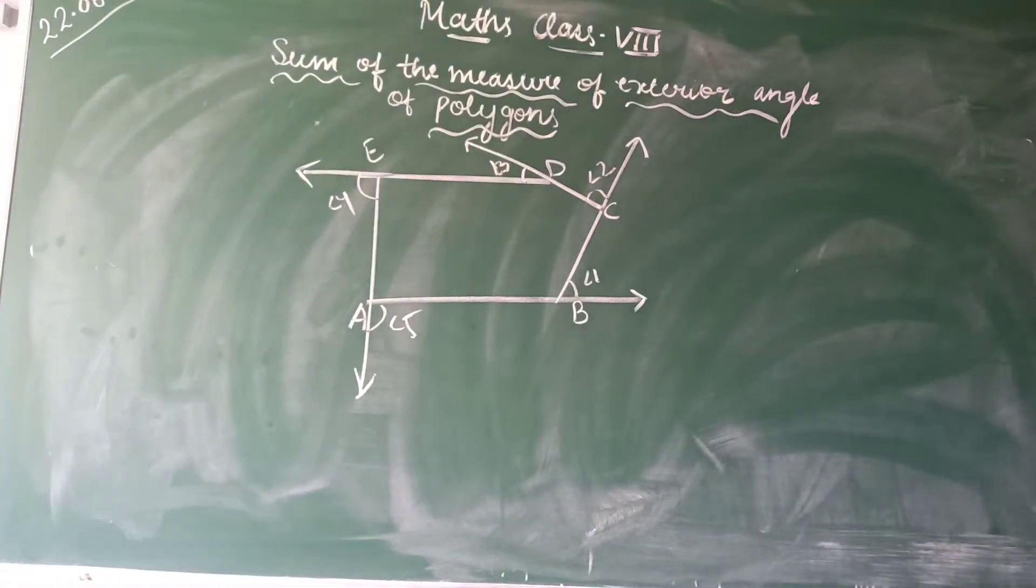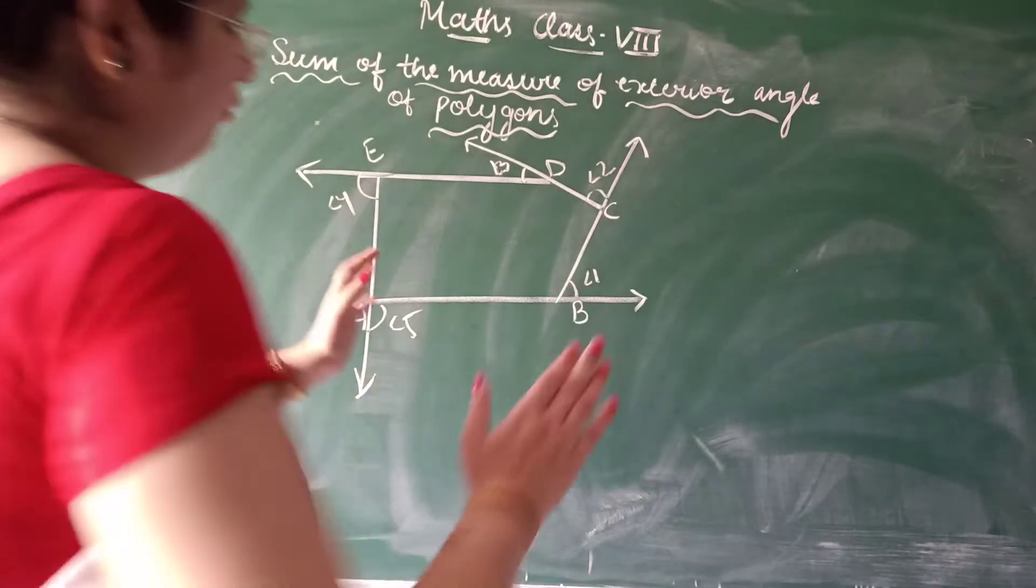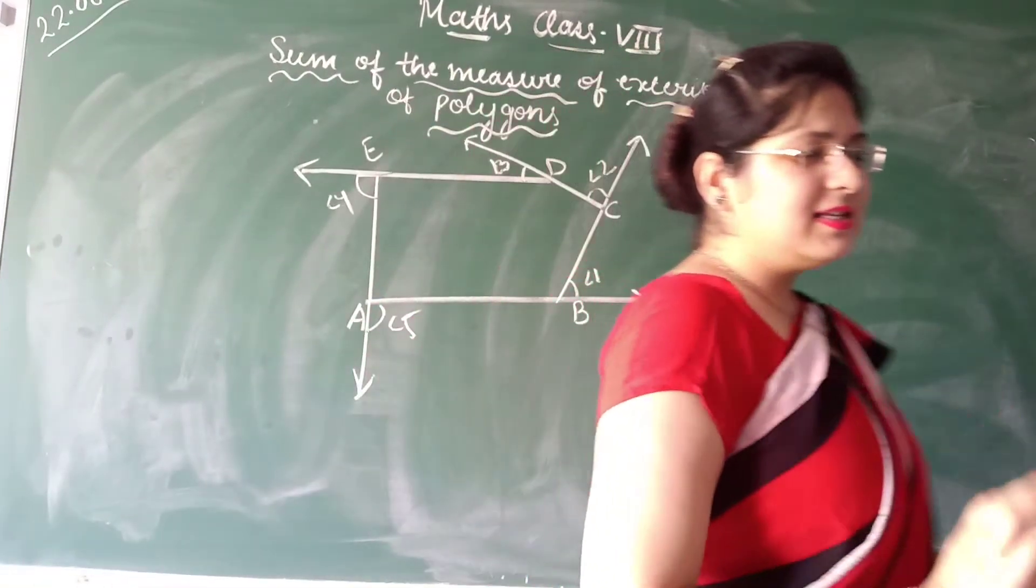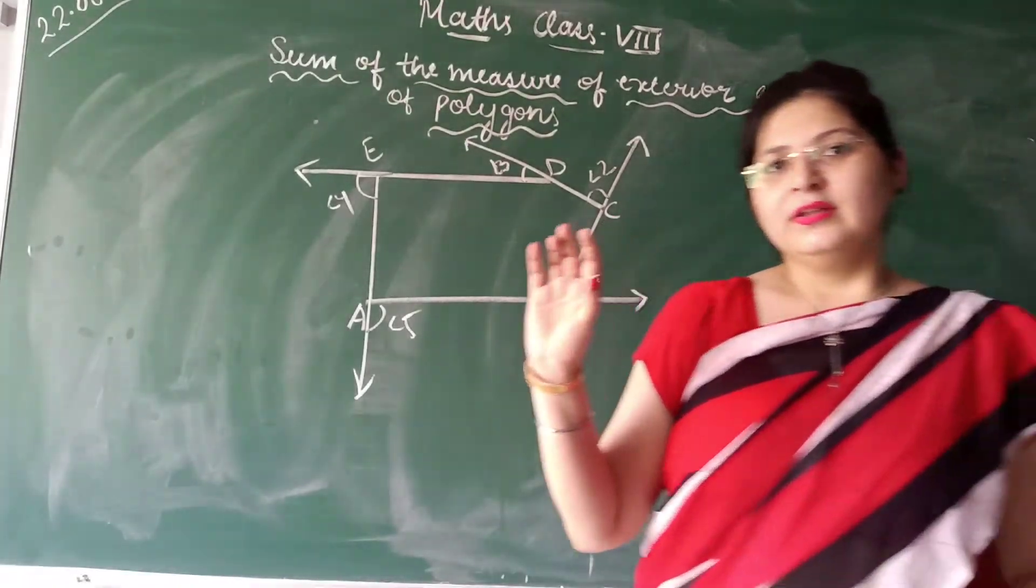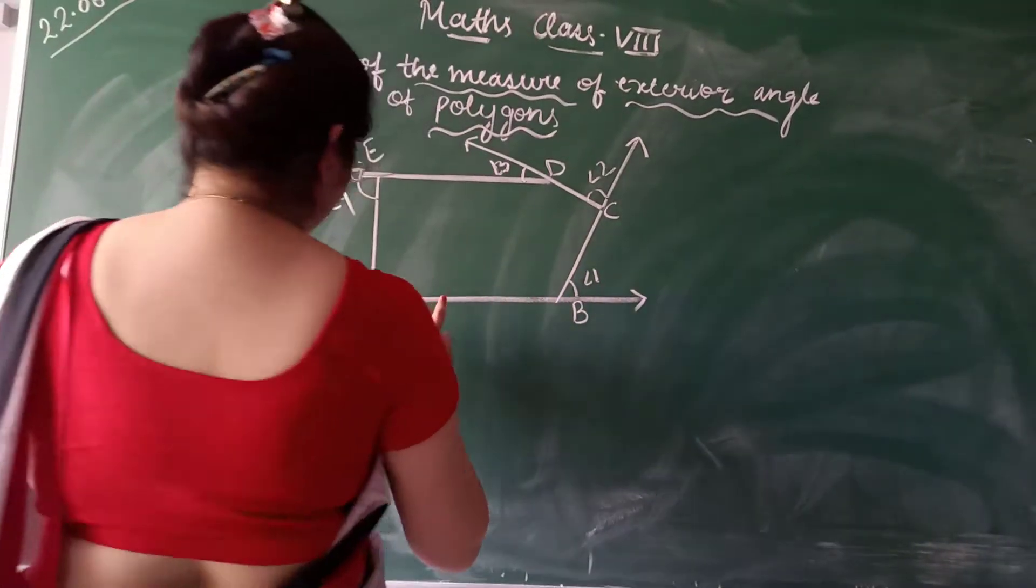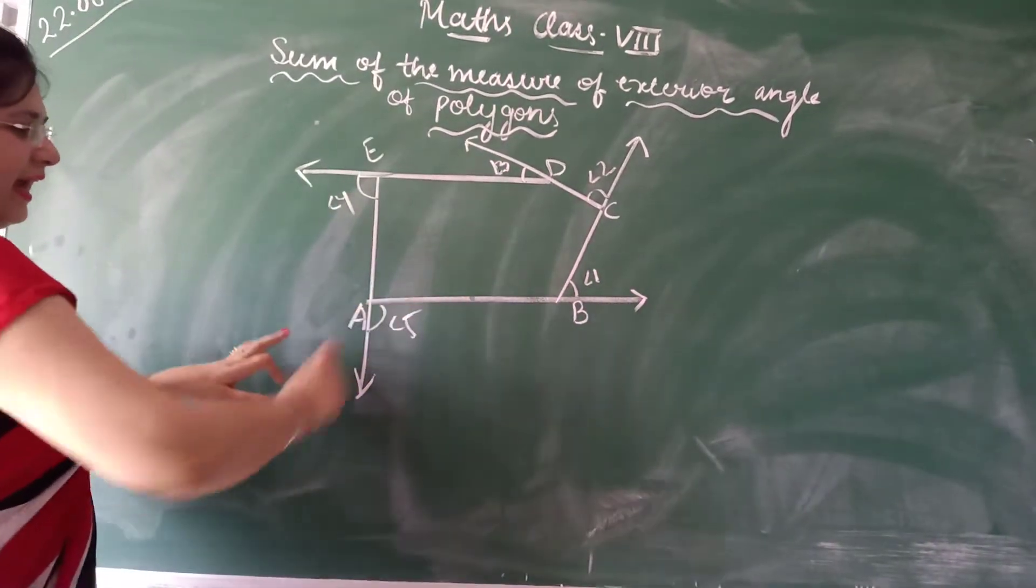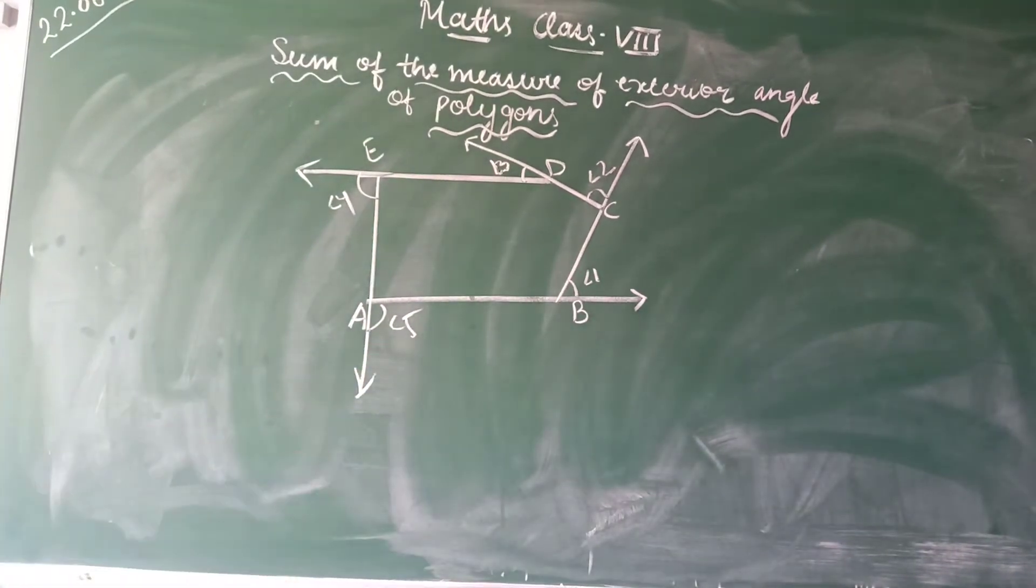These are all extended. When I extend any of the lines, when I draw any polygon like triangle or quadrilateral, when I extend any of the lines then between two adjacent lines they form an exterior angle.